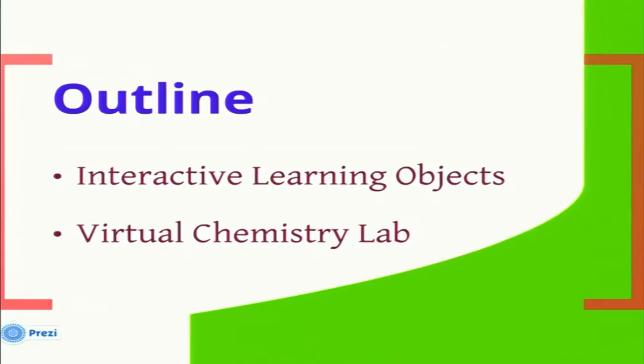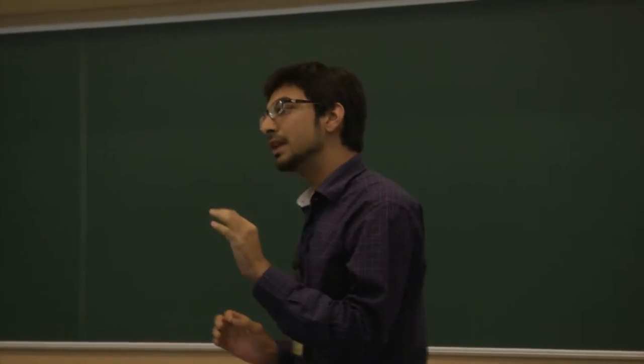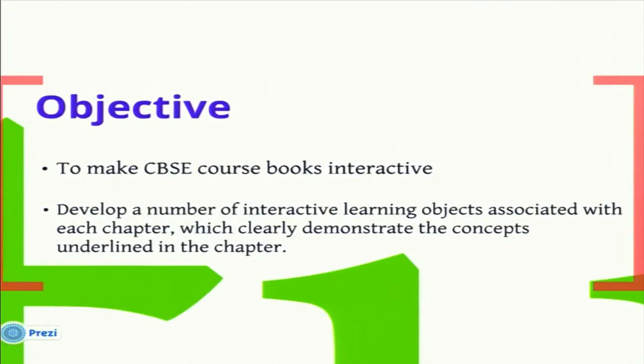The entire project may be broadly classified into two aspects. The first is the interactive learning objects, in which we created simulations of chemistry chapters in ActionScript. The second part is the virtual chemistry lab, in which we created a virtual chemistry lab and brought it to the virtual environment. The main aim was to create interactive learning objects of difficult chemistry chapters and present it to students so they can learn in an efficient and better way. In total we have completed 69 such interactive modules.